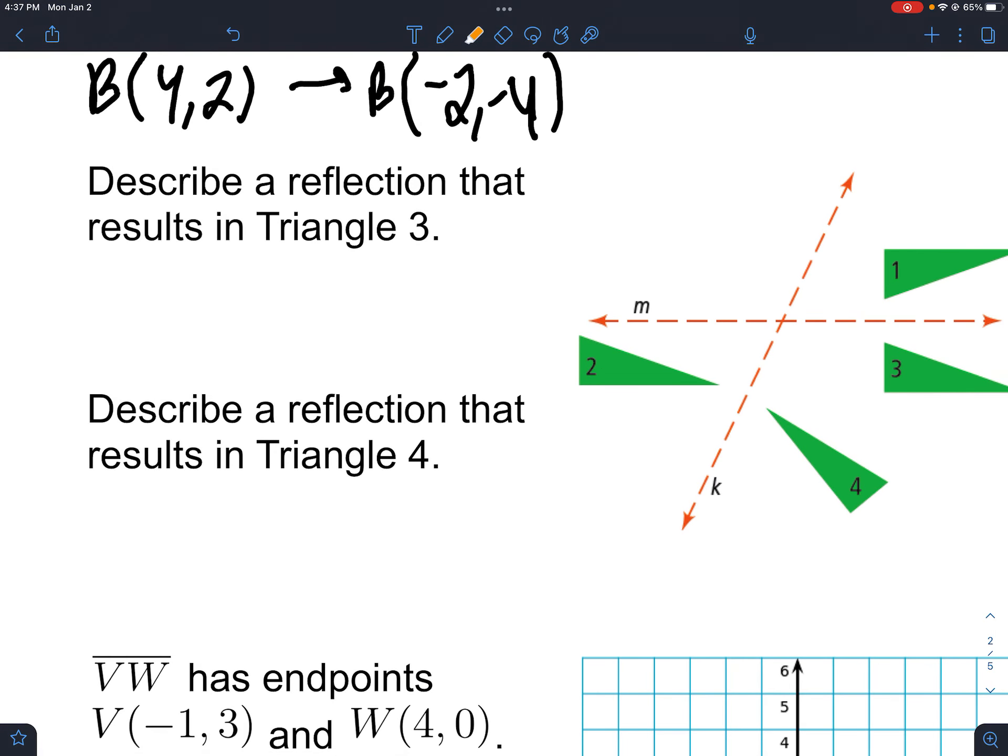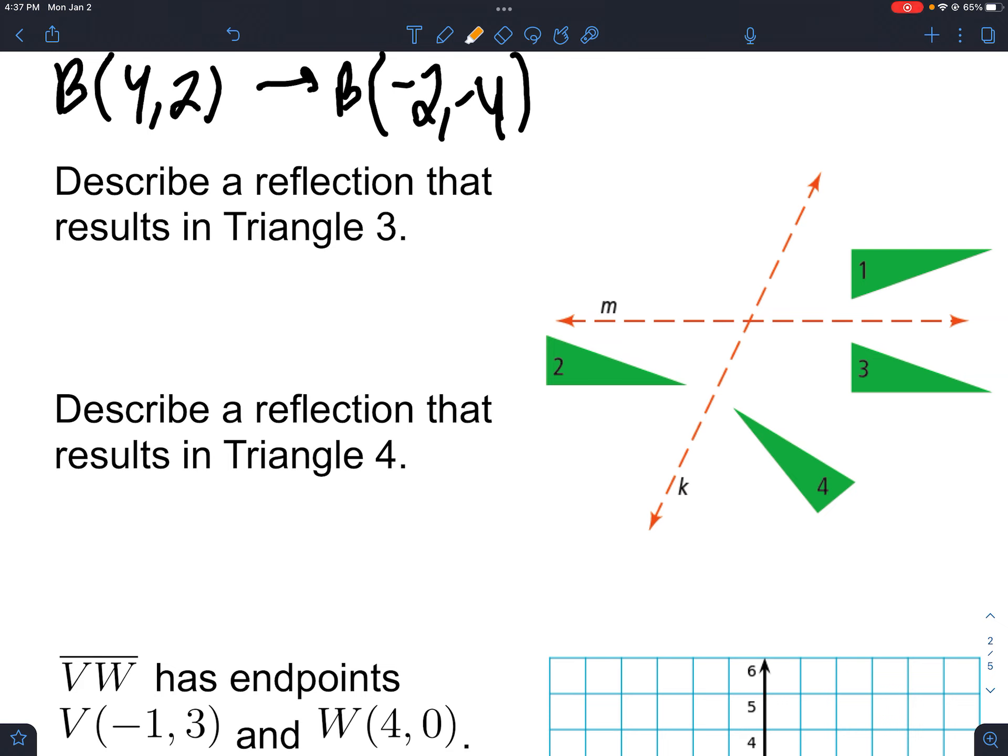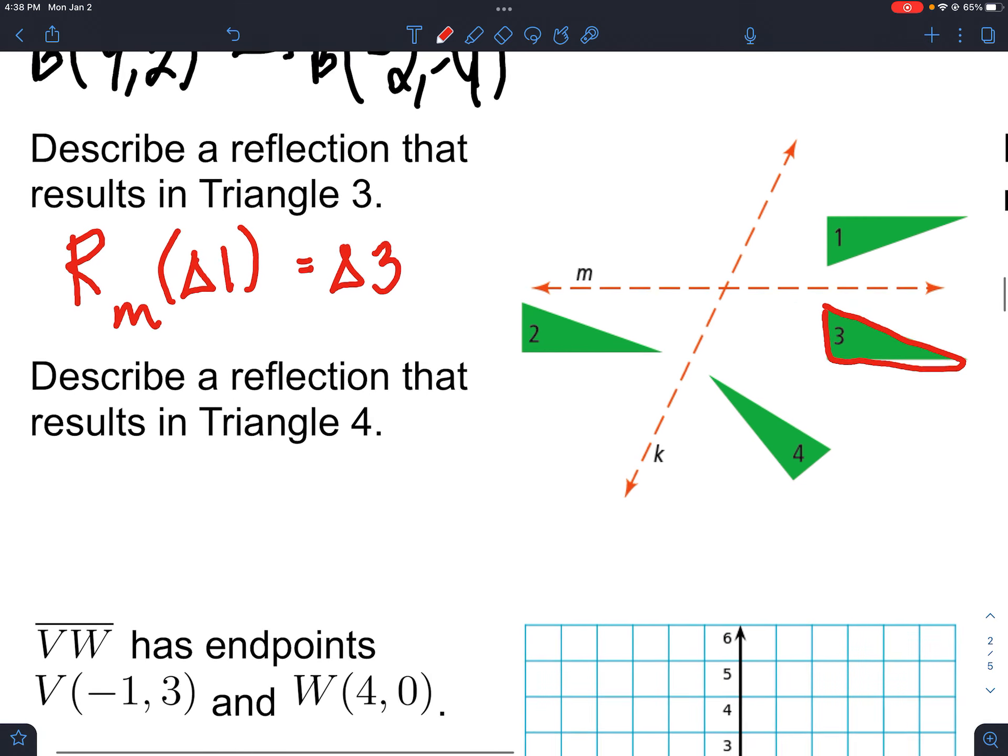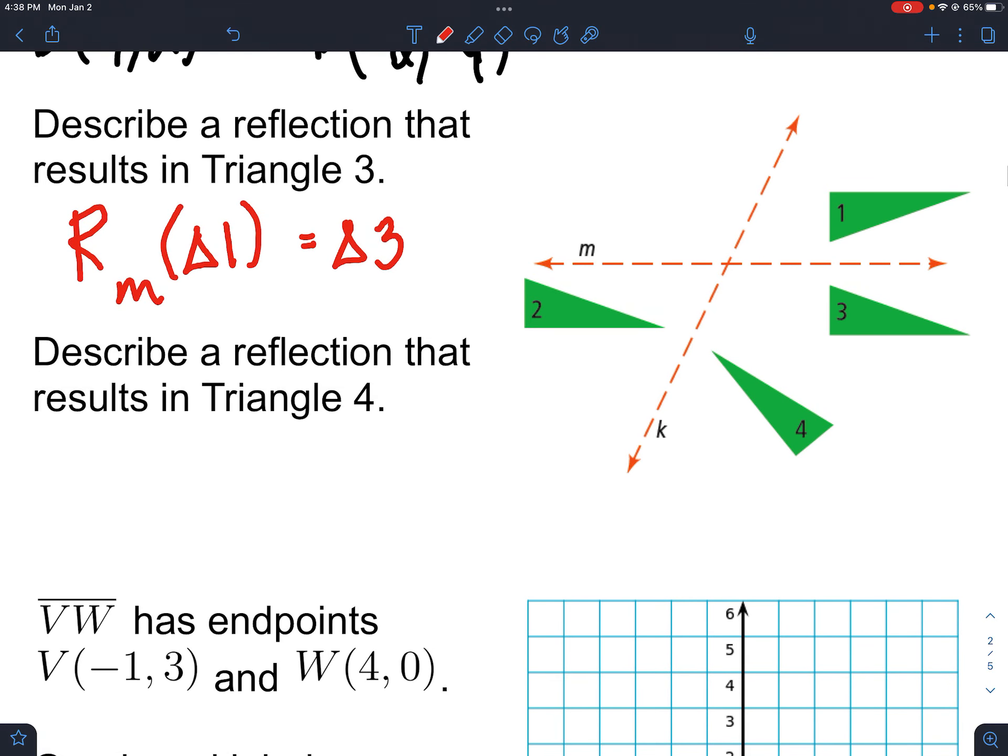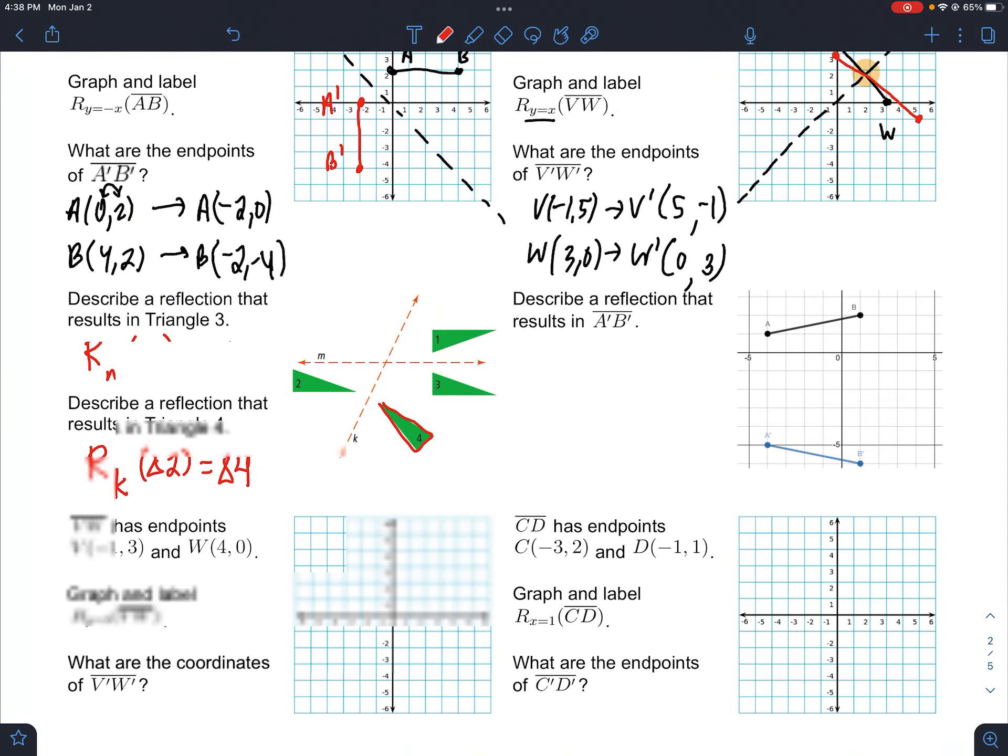Describe a reflection that results in triangle three. Well, if we want to get this right here, we could take this one and reflect it down. So if we reflect triangle one over M, we should get triangle three. And if we want to get four, I think the easiest way to do that would be to reflect triangle two over line K. So that's just practicing using the notation.